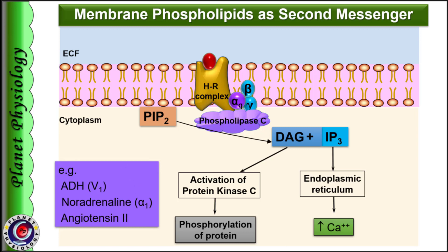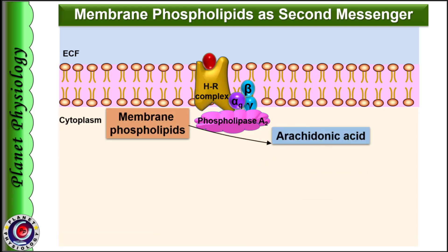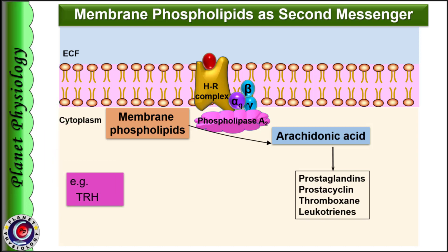DAG activates protein kinase C, leading to phosphorylation of proteins which mediates cellular response. Hormones like ADH, noradrenaline and angiotensin II act via the phospholipid second messenger system. Some hormones like TRH cause activation of phospholipase A2, which converts membrane phospholipids into arachidonic acid, which is then converted to prostaglandin, prostacycline, thromboxane or leukotriene. These products then mediate the cellular response. So membrane phospholipid second messenger system acts via DAG, IP3 or arachidonic acid.